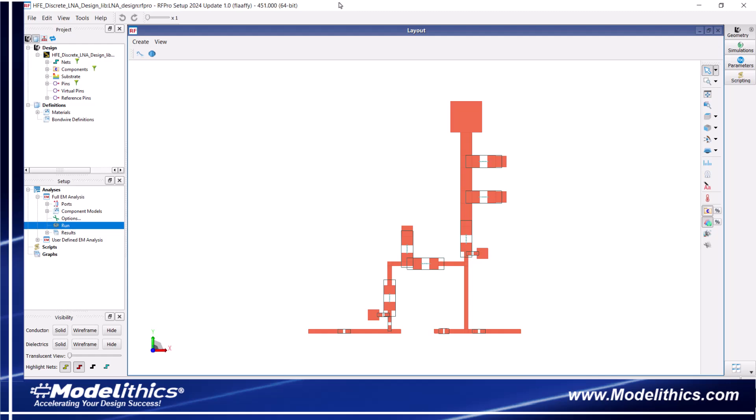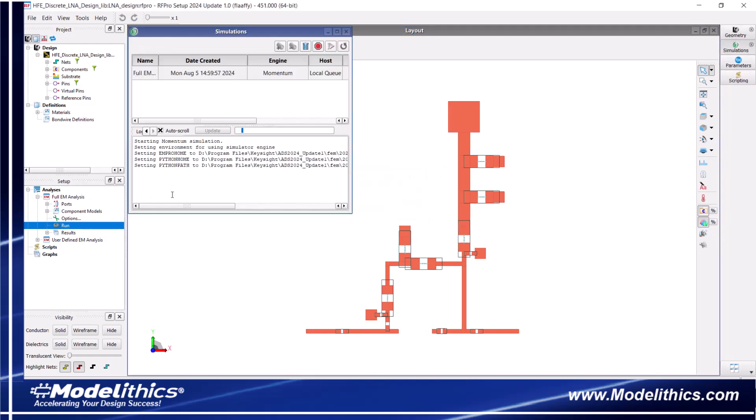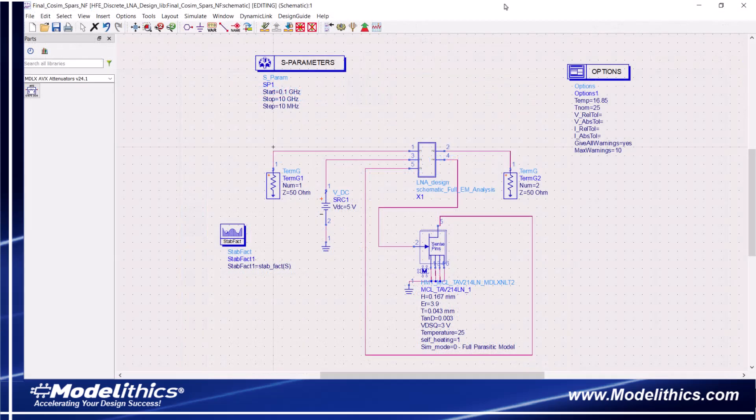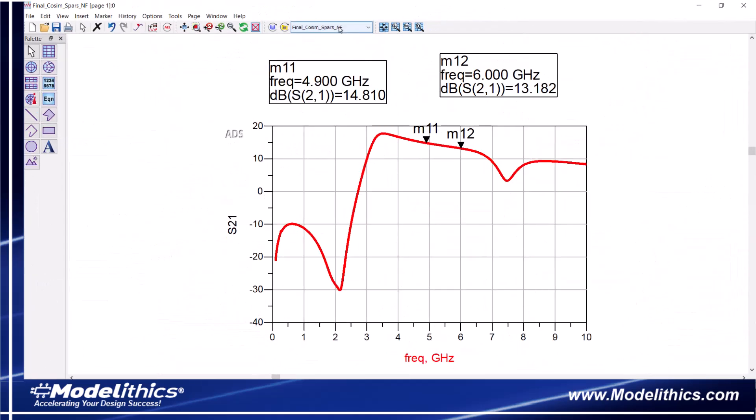In this case, we'll perform an EM circuit co-simulation. For more information on performing these types of simulations, check out Monolithics Application Note 77. Now getting back to this example, let's perform the simulation and look at the results.